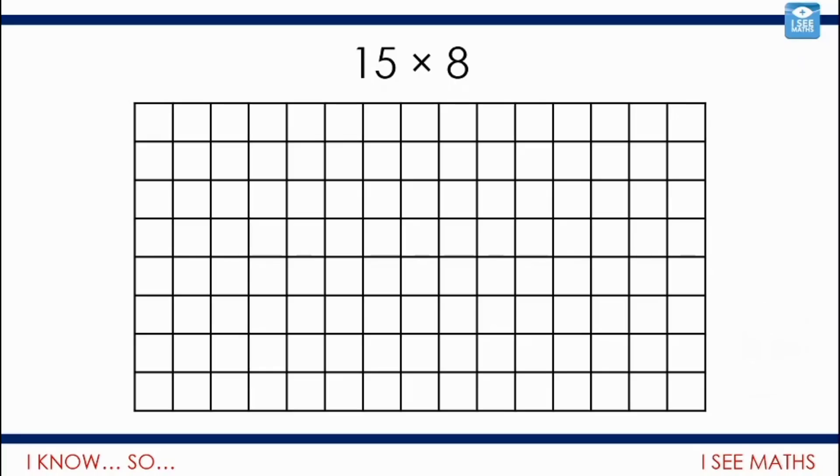Well, let's have a look at a few possible alternatives. It could be that I split the 15 up into 10 and 5. So, I do 10 lots of 8 and 5 lots of 8. 10 lots of 8 is 80. 5 lots of 8 is 40. So, in total, it'll be 120 squares.